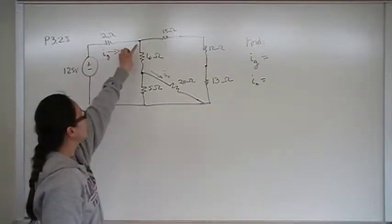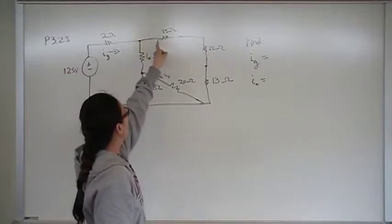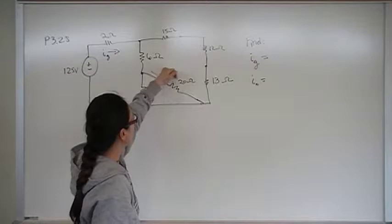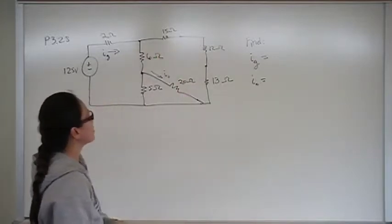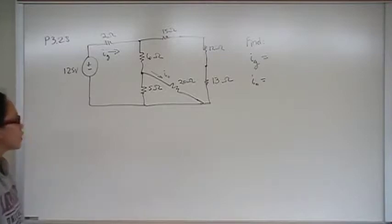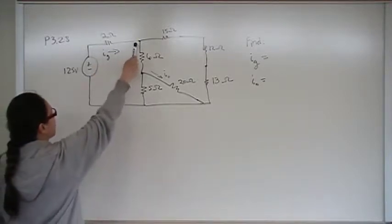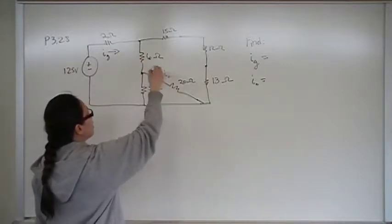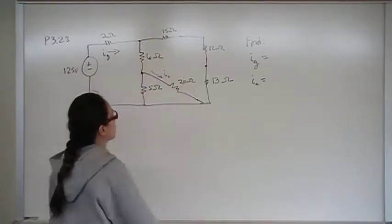We have 2 ohms connected in series with 6 and 15. 6 is connected in series with 15 in parallel with 20 in this branch, and over here we have 15 in series with 12 in series with 13. We want to find IG, which is the current going into that node, and also I0, which is the current going through the 20 ohm branch.